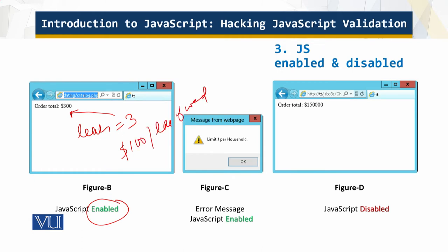With JavaScript still enabled, the number of leaves is changed from three to four. An error message appears — only up to three units are allowed. So JavaScript is validating the input correctly when it is enabled.